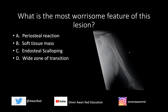I'll give you a couple seconds to ponder about that. And of course, the answer here is none other than endosteal scalloping. Notice that the cortex is made up of an outer layer of periosteum and an inner layer of endosteum. This lesion is scalloping the endosteum — the inner layer of the cortex — erasing part of that inner endosteal cortex.